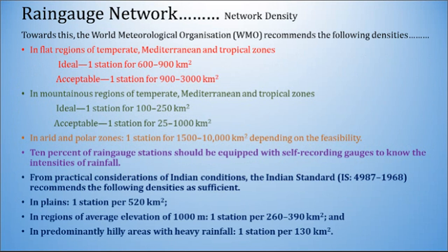Towards this, the World Meteorological Organization WMO recommends the following densities. First, in flat regions of temperate, mediterranean and tropical zones, ideal is one station for 900 to 900 km² and acceptable is one station for 900 to 3000 km². Second, in mountainous regions of temperate, mediterranean and tropical zones, ideal is one station for 100 to 250 km² and acceptable is one station for 250 to 1000 km². In arid and polar zones, one station for 1500 to 10000 km² depending upon the feasibility.